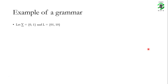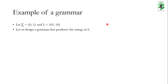Let us look at an example. Again, let us say our alphabet contains only two letters, 0 and 1, and the language has only two words, 01 and 10. We will design a grammar that produces the strings in this language. Remember, the machine was viewed as a device which can accept the strings in the language, whereas a grammar is viewed as a procedure which can produce the strings in the language. Our grammar has three production rules: the first says S → AB or BA, the second says A → 0, and the third says B → 1. This notation — something on the left-hand side, an arrow, then something on the right-hand side — is called a production rule.